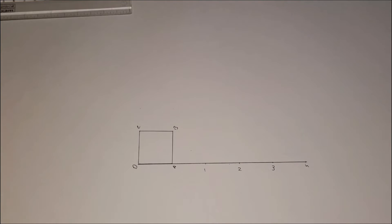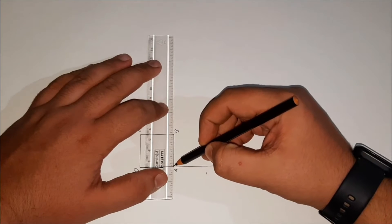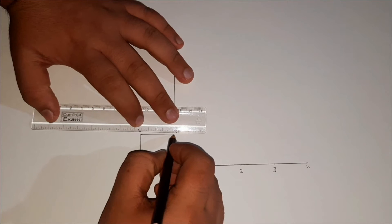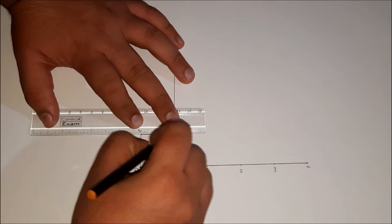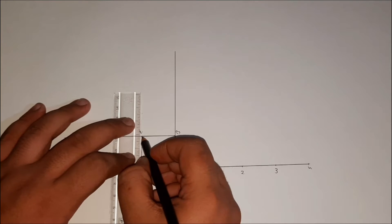Next step is to extend all the lines. First we will extend AB, then BC, and last CD.